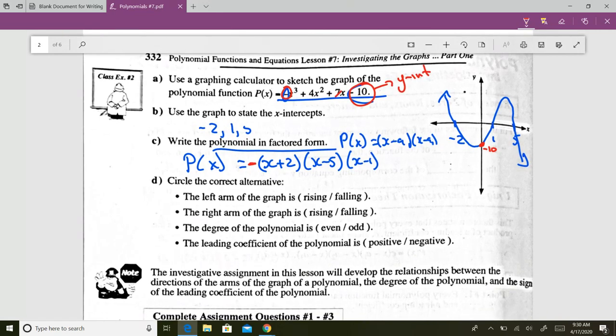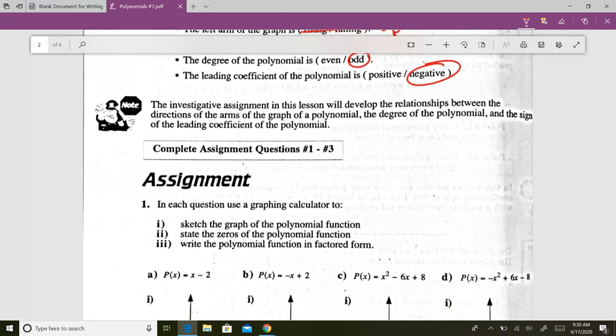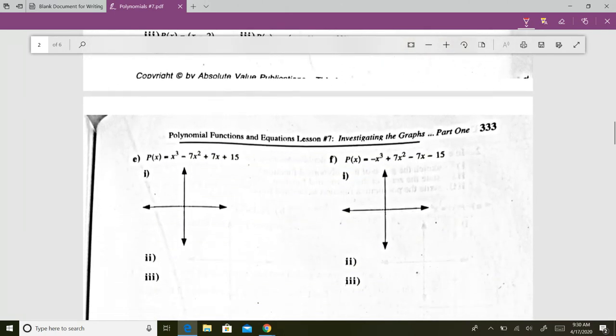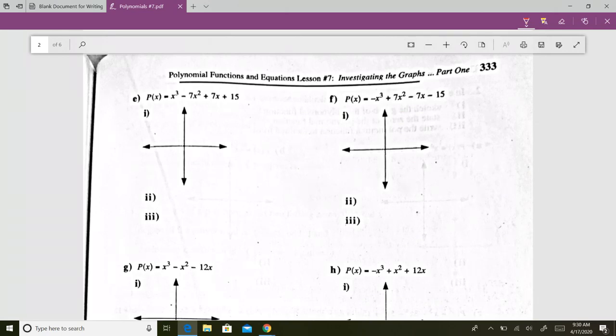And just like on this one, we said the leading coefficient was positive so you could put a plus 1. This one, since it's negative, you must put the negative there. Some general observations. The left arm is up, the right arm is down. The degree of the polynomial, so the highest exponent, is odd, it's 3. And the leading coefficient, we just said, is negative. The questions I want you to do, and I'm going to do one of them with you. E to J number one, E to J number two, A to F.